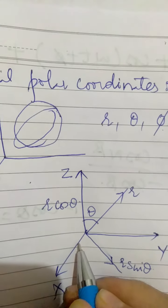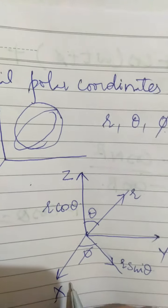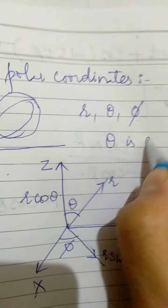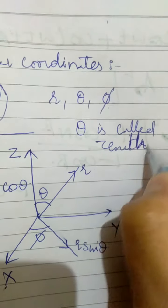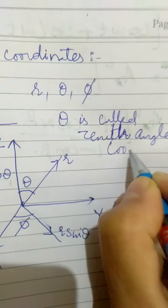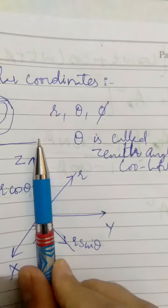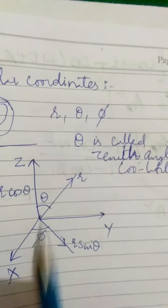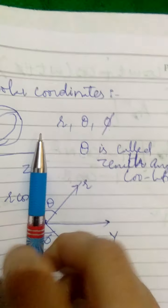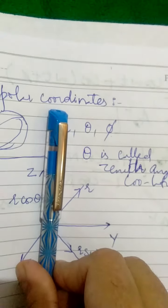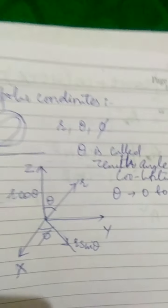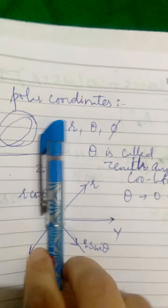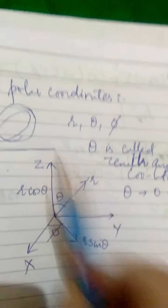This component r sin theta makes an angle phi with the x-axis. Now, theta is called the zenith angle, or it is also called co-latitude. The r vector makes an angle starting from 0 with z and can turn at most to 180 degrees, so the value of theta ranges from 0 to pi.